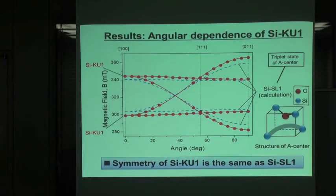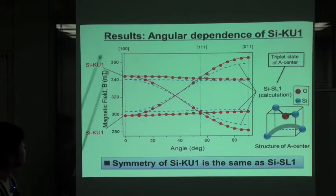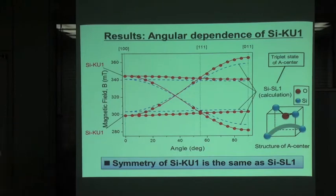We found the new signal. Then, what we have to do in the next step is to check the structure of this spectral defect. In order to check the symmetry of the defect, we check the angular dependence of this KU1 spectra.